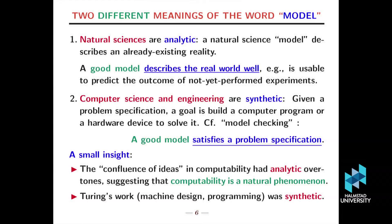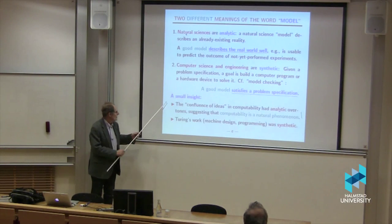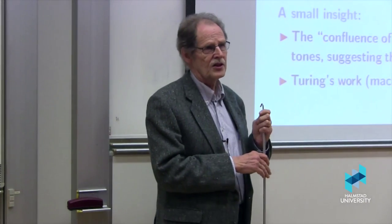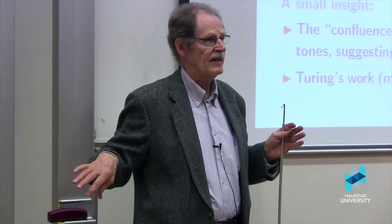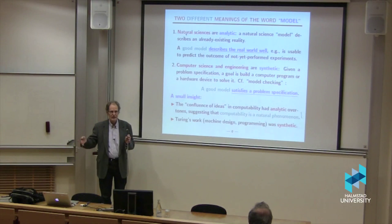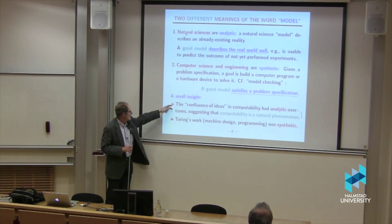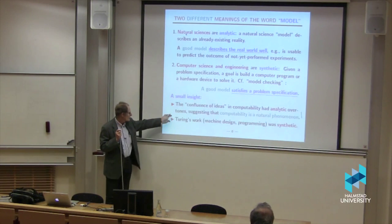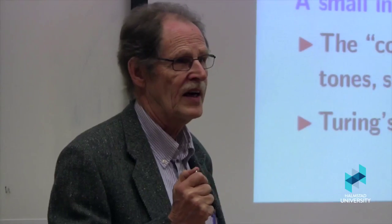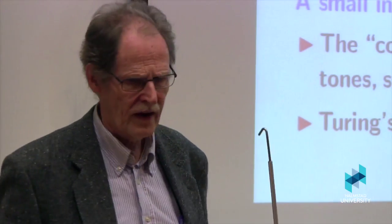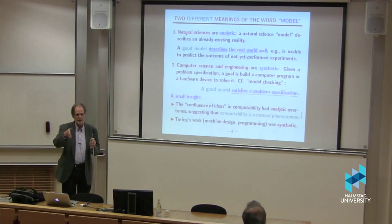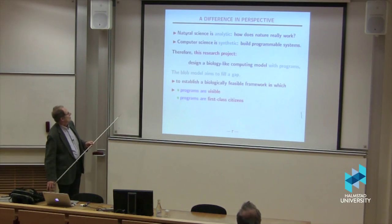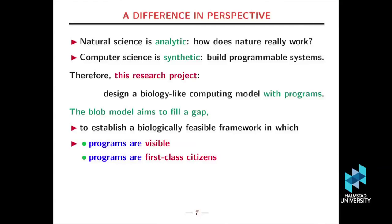In the natural sciences, they're analytic. There is an already existing reality, and a model should be something that explains what happens in reality. And if it's a good model, then you can make predictions about what will happen. In computer science and engineering, model checking is something completely different. Here, we begin with a specification, and a good model is something that satisfies the program specification. The modeling is essentially a synthetic process. And so there's two different meanings there, and I finally realized it was important to distinguish them.